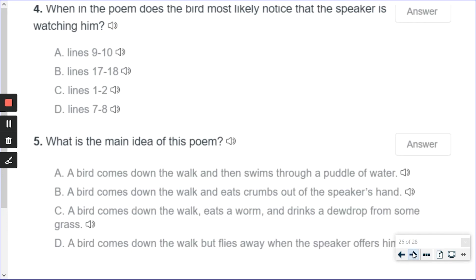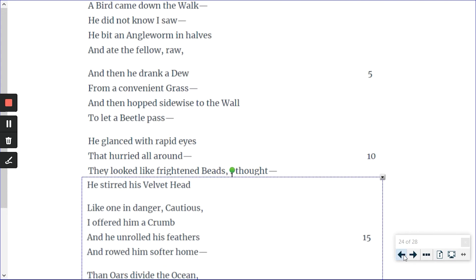This is question four. When in the poem does the bird most likely notice that the speaker is watching him? Let's go back and see. Now, it's going to be lines 9 and 10, 7 to 18, 1 and 2, 7, 8.